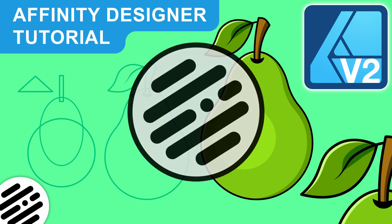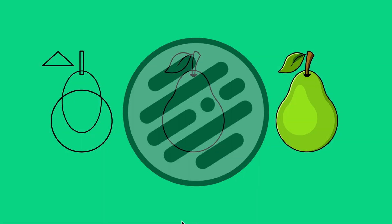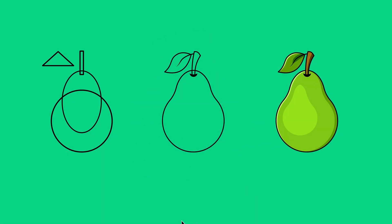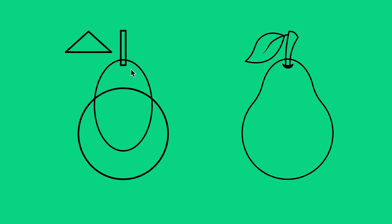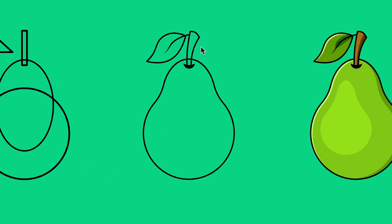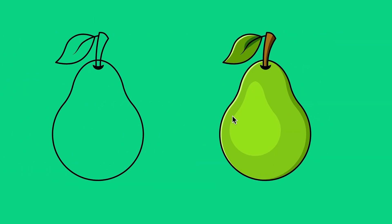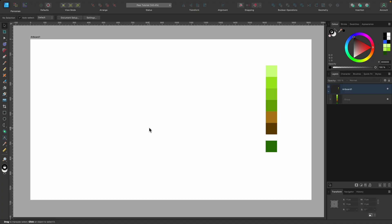Hello designers and welcome back to another Affinity Designer tutorial. Today I'm going to show you how to create a pear. We'll go from this on the left hand side - a bunch of shapes - to this which looks like a pear, and then adding colour so you end up with this. Let's get into it.